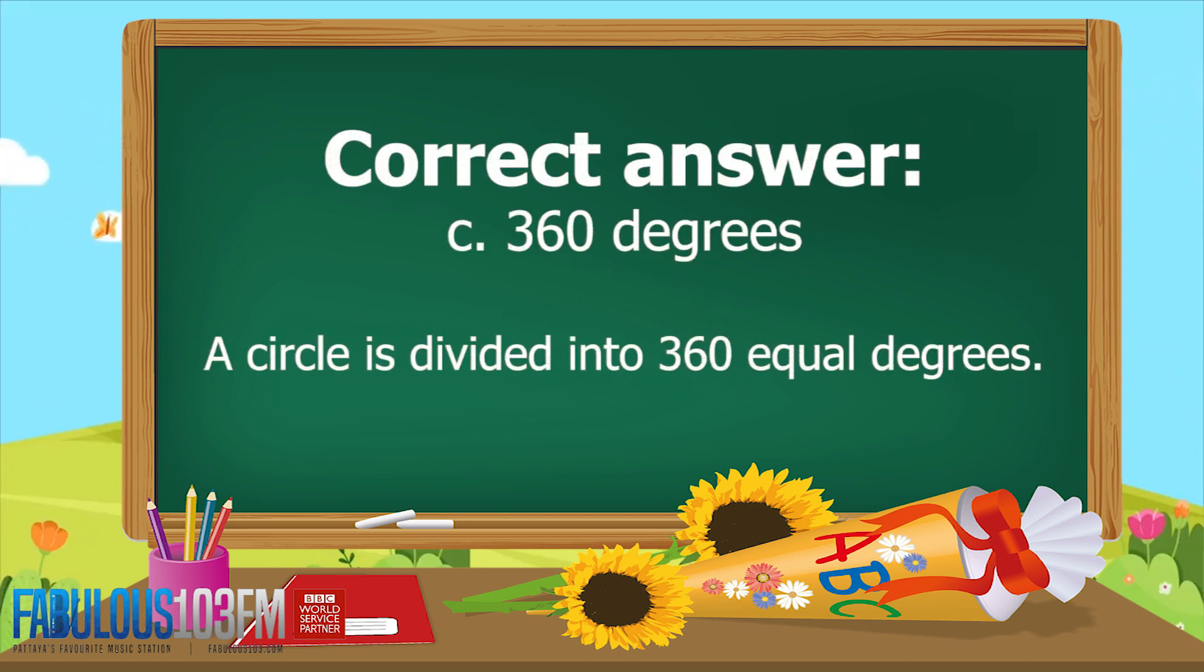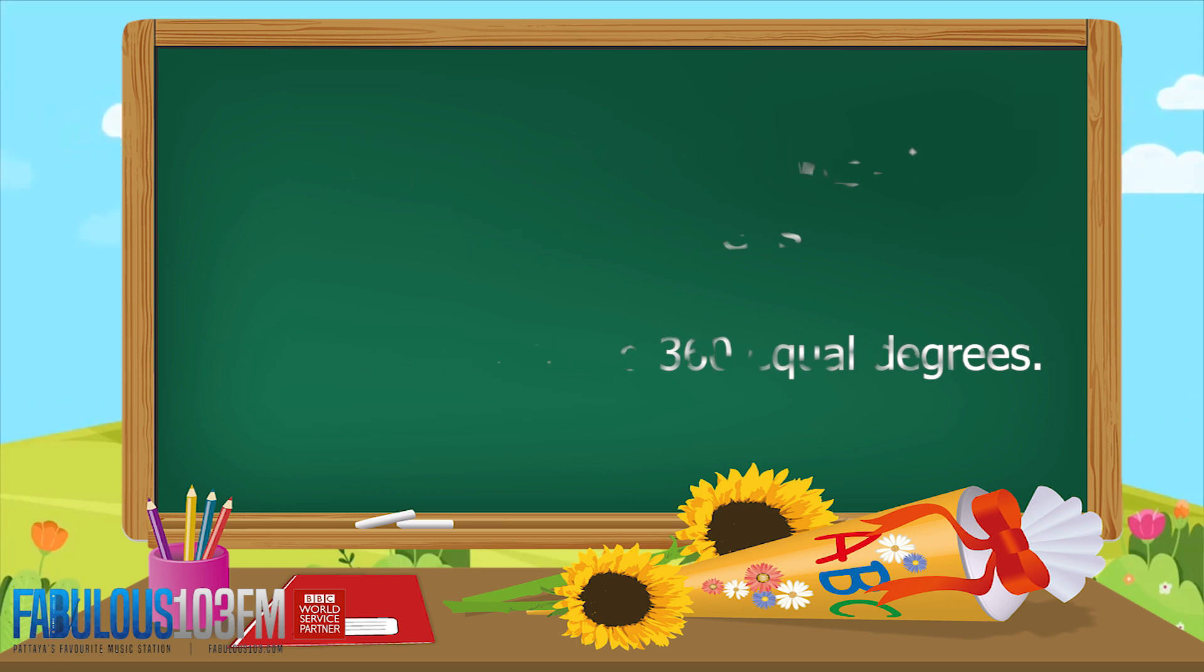And the correct answer is c) 360 degrees. A circle is divided into 360 equal degrees. The second question I asked you on Friday...